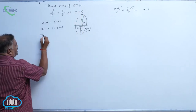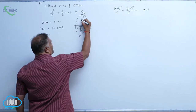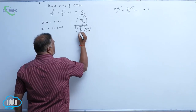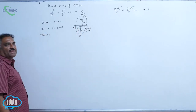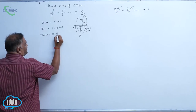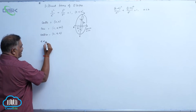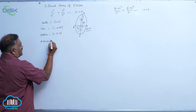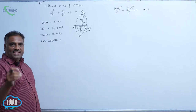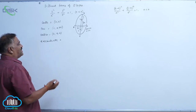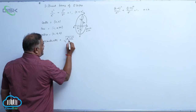Next, vertices: B and B' are vertices, S and S' are foci, A and A' are the minor axis endpoints. Vertices are given by (0, ±b). Eccentricity is given by: previously it is √(a² - b²)/a²; now, with a and b interchanged, it is √(b² - a²)/b².